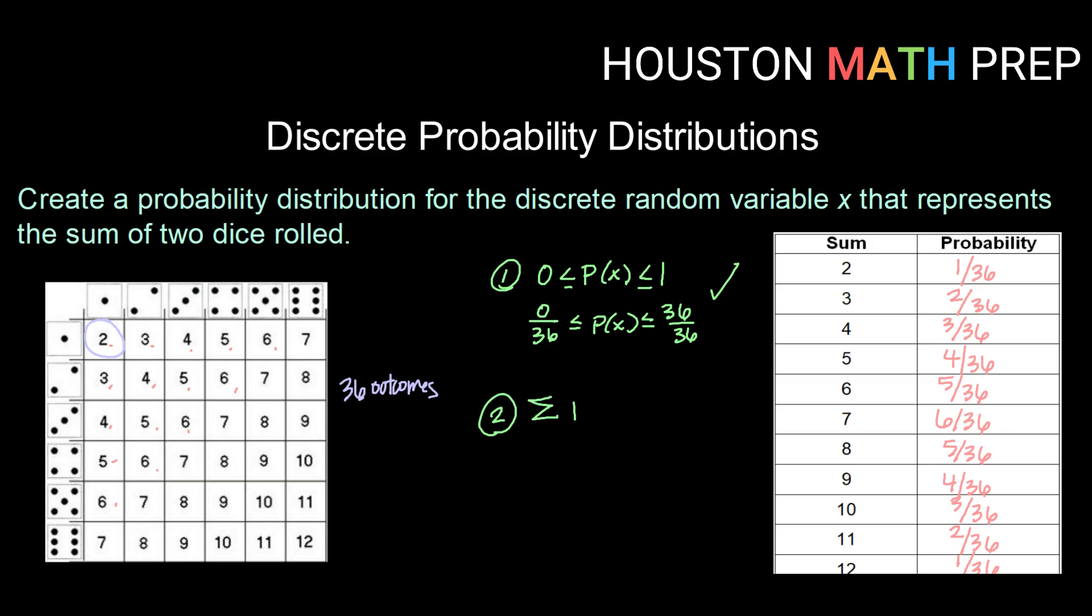The second is that the sum of all your probabilities need to add up to 1. So again, 1 in this case would be 36 out of 36. So if I added up my numerators, 1 plus 2 plus 3 plus 4 plus 5 plus 6 plus 5, 4, 3, 2, 1, then I would in fact get 36 out of 36. You can verify that for yourself. And so we do meet our two conditions.